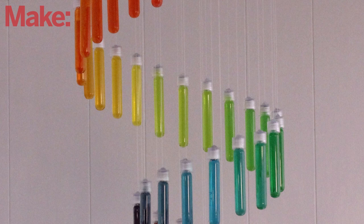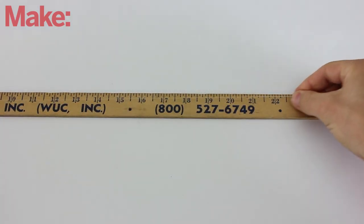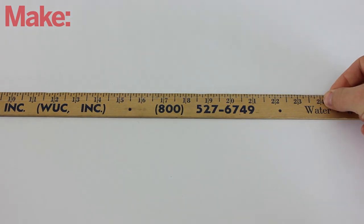Each of the test tubes will be suspended by a piece of fishing line. So the next thing to do is cut 37 pieces of fishing line that are each about 2 feet long.